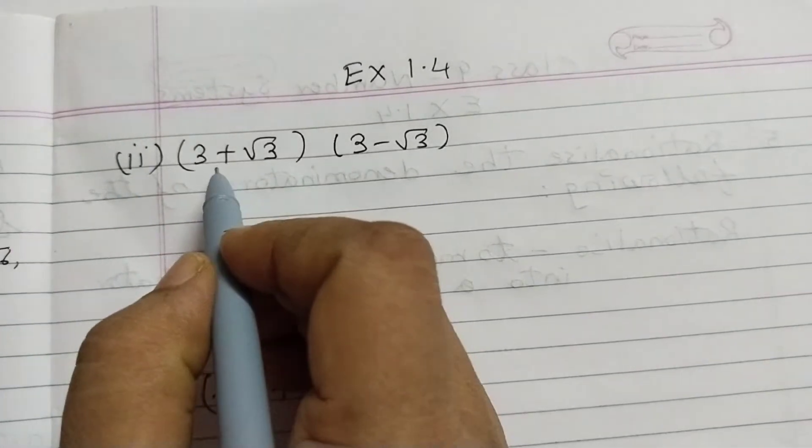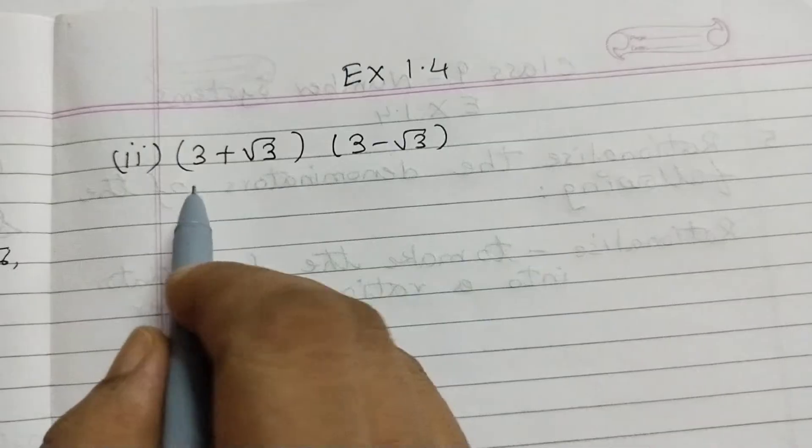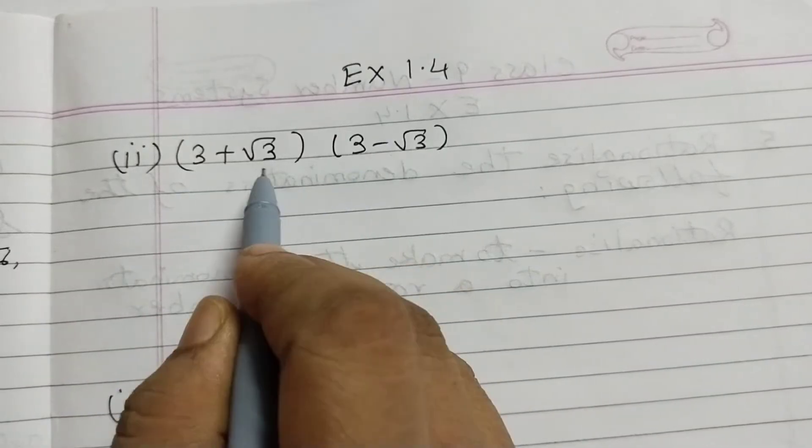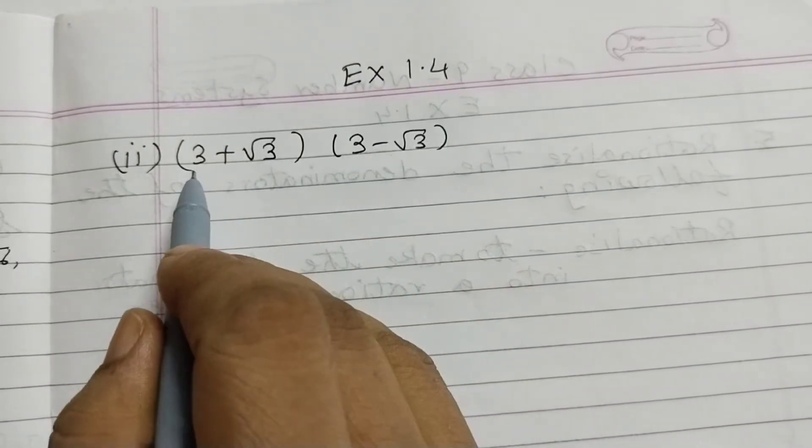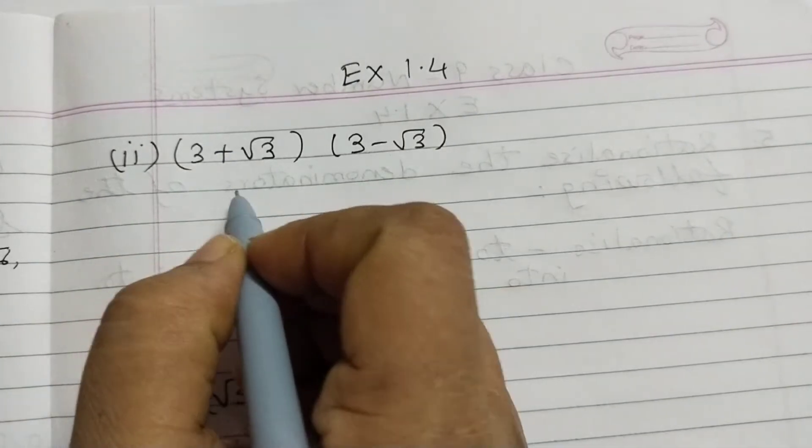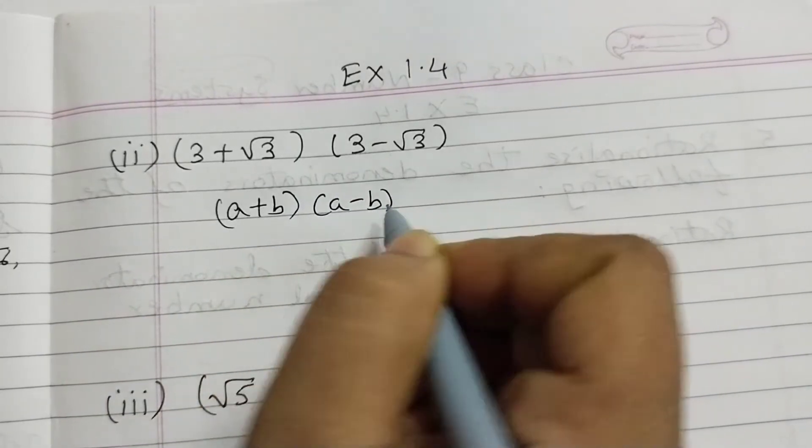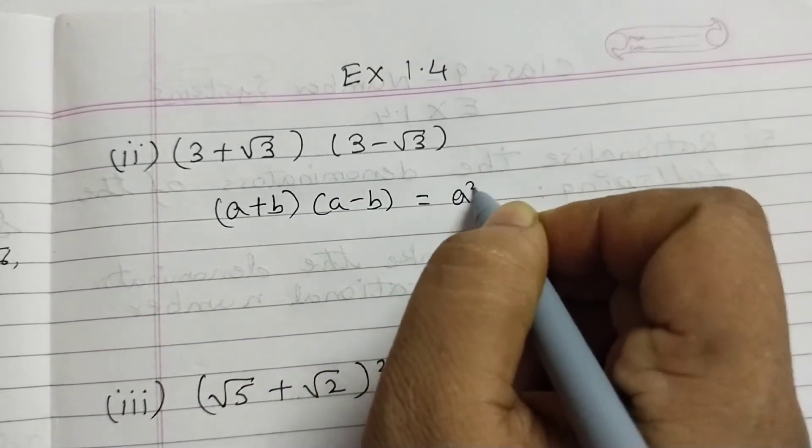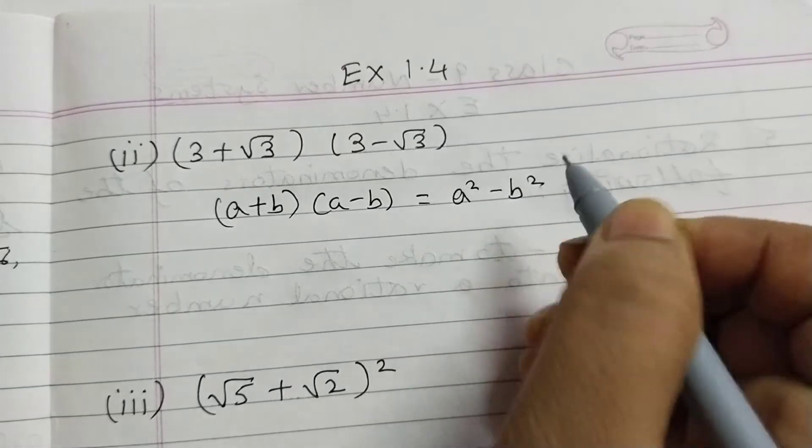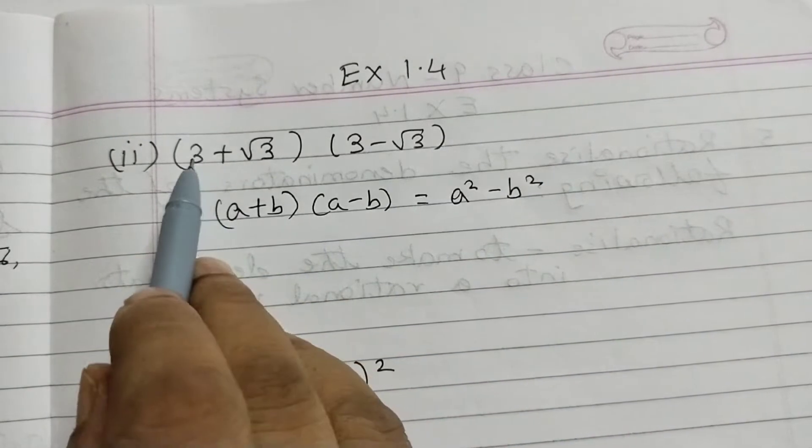Question number 2, 3 plus root 3 multiplied by 3 minus root 3. So here we have 3 and 3 common, again root 3 and root 3. That means these are same numbers. So we can use the identity which is a plus b into a minus b equals a squared minus b squared.